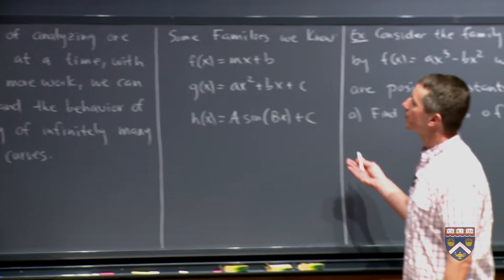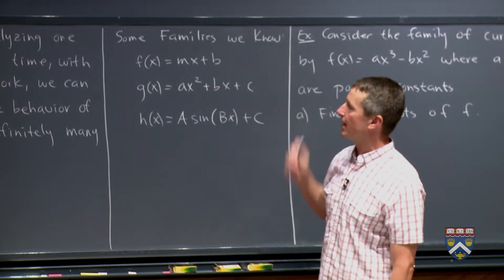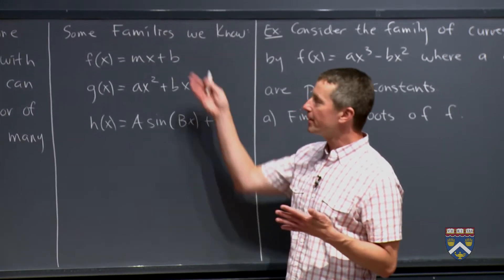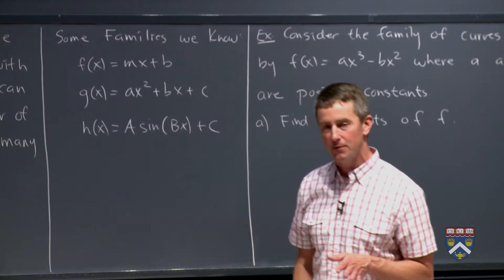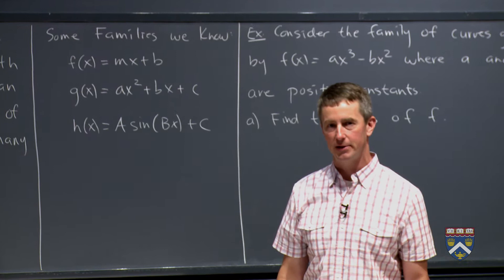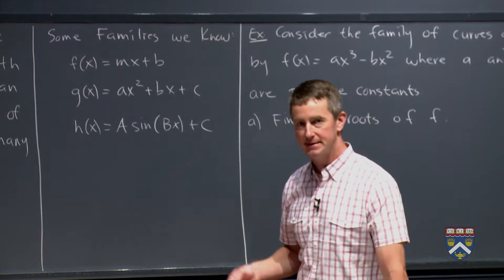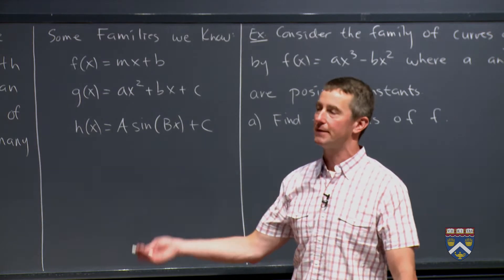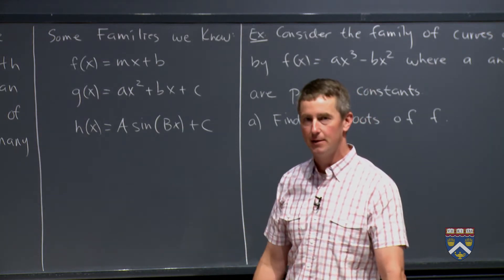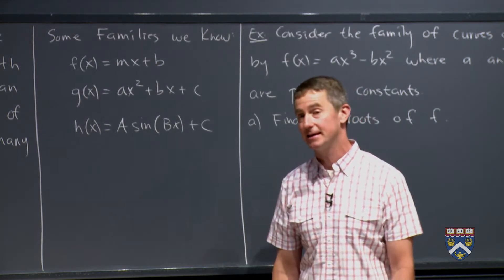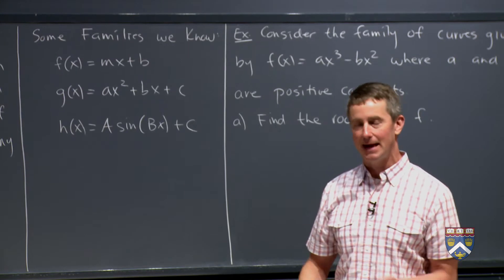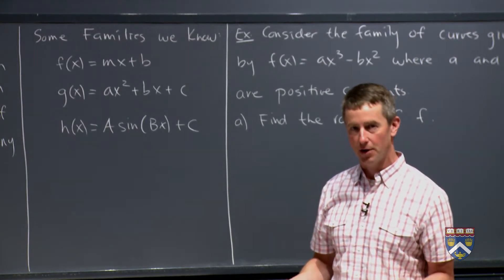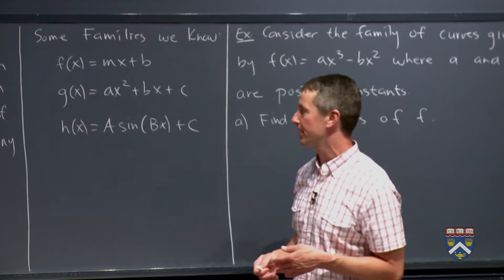Some families that we already know are things like the family of linear functions mx plus b. Probably as soon as you see a member of this family, you know pretty much everything there is to know about it. If you see 7x minus 11, you say the slope is 7 and the y-intercept is negative 11. Then if you see negative 3x plus 5, it's not some completely strange thing because it's a member of the same family.